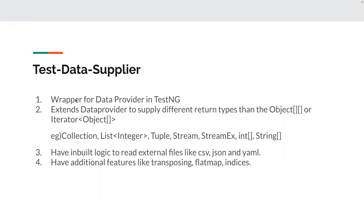We will see that in detail in this video, so let's get started without wasting much time. In TestNG data provider, the method return type should always be a two-dimensional object array or an iterator of object array. But Test Data Supplier can help you return different data types — for example, any collection, list of integers, tuples, streams, StreamEx, integer arrays, string arrays, or long arrays.